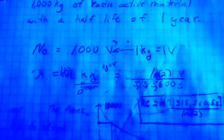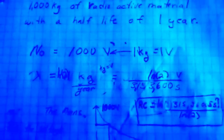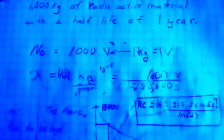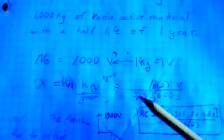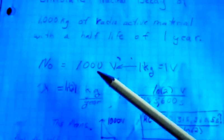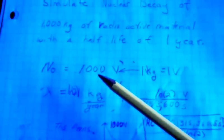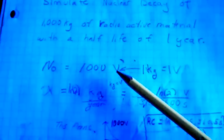For our example, we will have a thousand kilograms of radioactive material and the half-life will be one year. So if we were to put this straight into a differential equation and then convert it to op amps, NO would be a thousand. For a thousand kilograms, we convert that to a thousand volts.